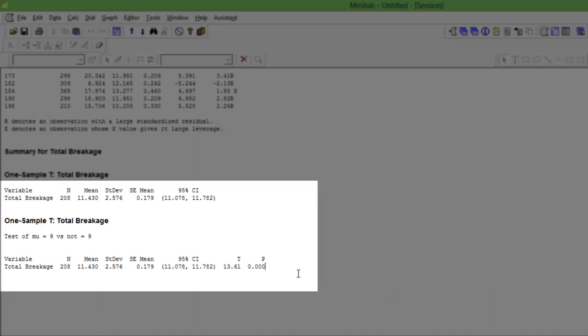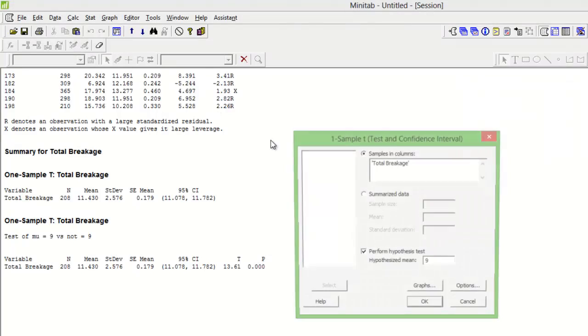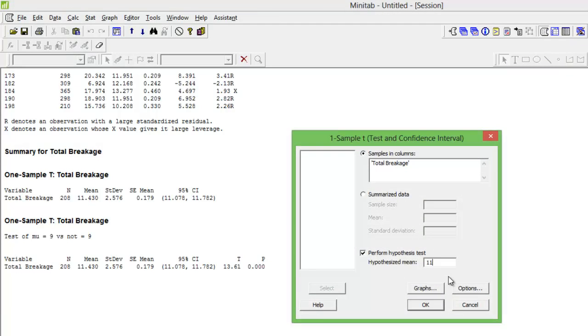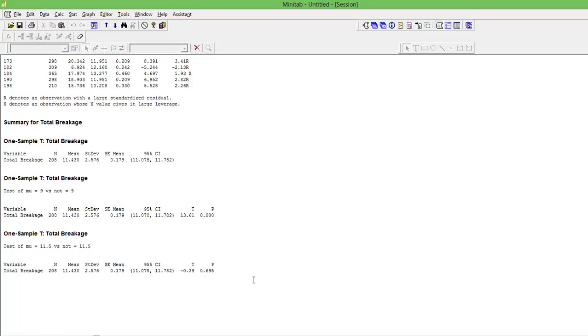P value is 0.000, meaning alternate hypothesis is true. So if I were to give it a target of anything between 11.07 and 11.7, let me give it a target of 11.5, it will say null hypothesis. Yeah, here you go, 0.695, greater than 0.05 meaning null hypothesis is true. That is, my data shows that the mean of my sample equals the standard. I hope this simple video helps.